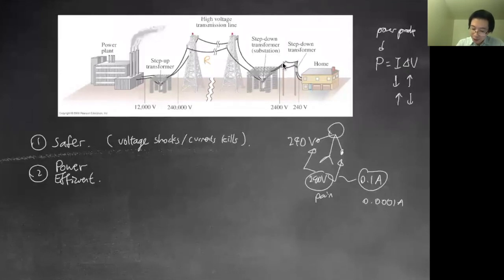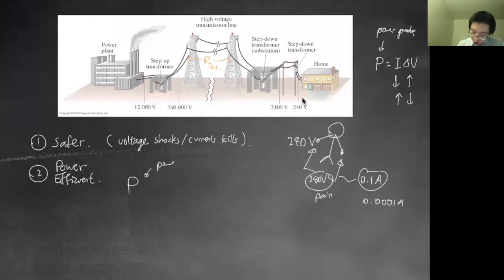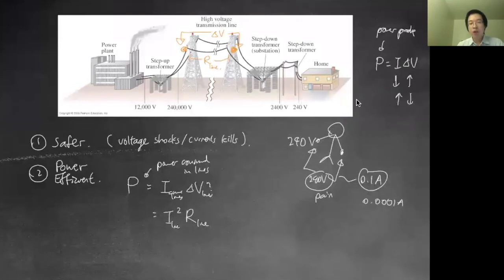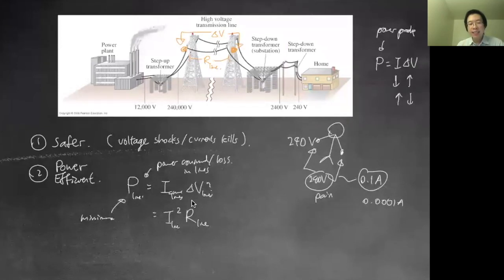The main reason is power efficiency. Every real wire has some resistance — it's not ideal. The power lost in the transmission lines is P_loss = I² × R. We want to minimize this power loss, so we minimize the current. That's why we prefer extremely high voltage — and correspondingly low current — through the transmission lines. This is the primary reason we step voltage up for long-distance transmission.